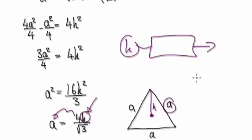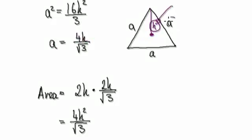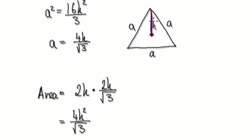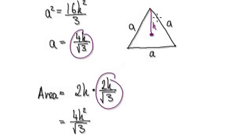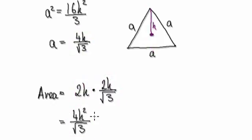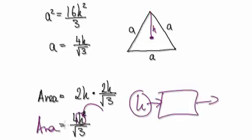Once we know a, we can work out the area. So when given h, we work out a, and then we can compute the area. You take h and multiply it by 2 — that gives you the whole base length. Then you multiply by half of a, where a divided by 2 goes to the bottom, so the 4 becomes 2. The area is then expressed in terms of h, so now we have a formula: given h, we can work out the area.